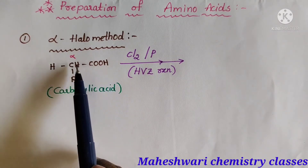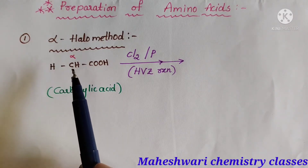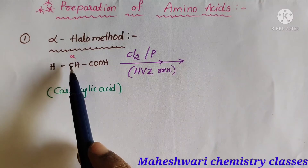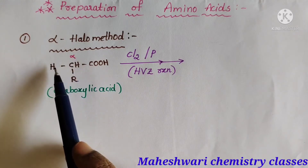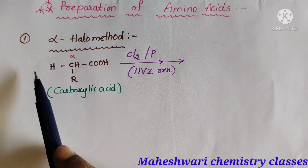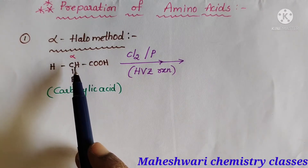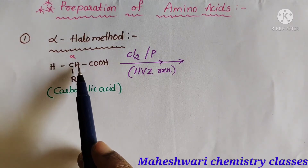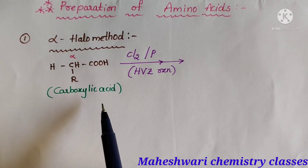The carboxylic acid is CH2R-COOH. The carbon beside the carboxylic acid is called alpha — this first carbon is called alpha, the second carbon is called beta, and the third carbon is called gamma. The hydrogen atoms on this alpha carbon are called alpha hydrogens. This is the type of carboxylic acid we will use.